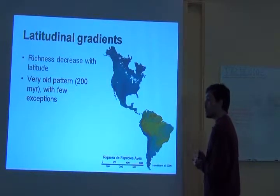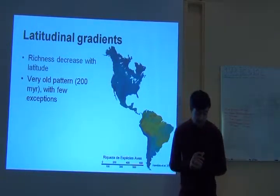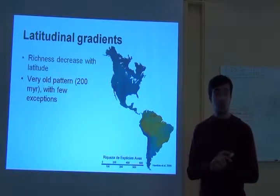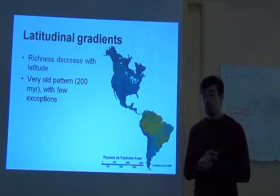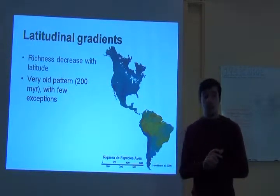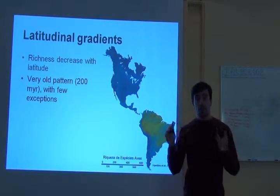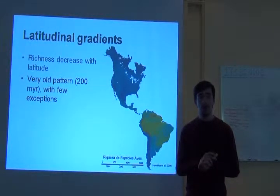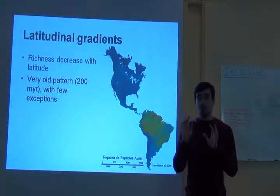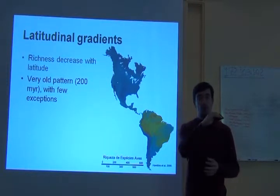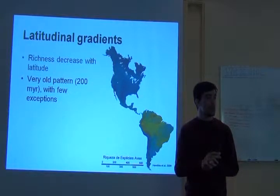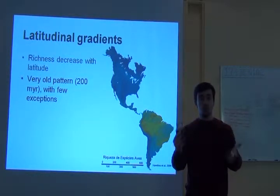You can actually see this pattern in the fossil record and it dates back to 200 million years, so it's not something new. In fact, continental drift has moved continents around the surface of Earth, and every time a continent moves away from the equator, species richness tends to decrease in that continent.